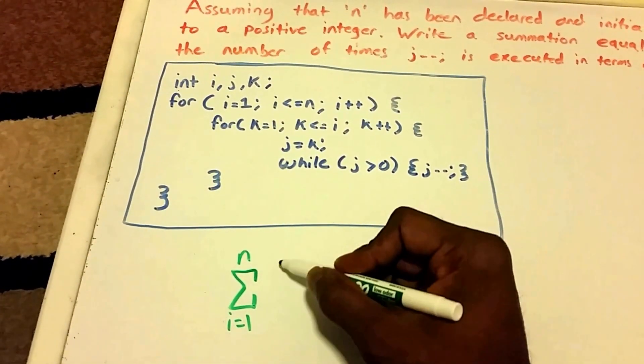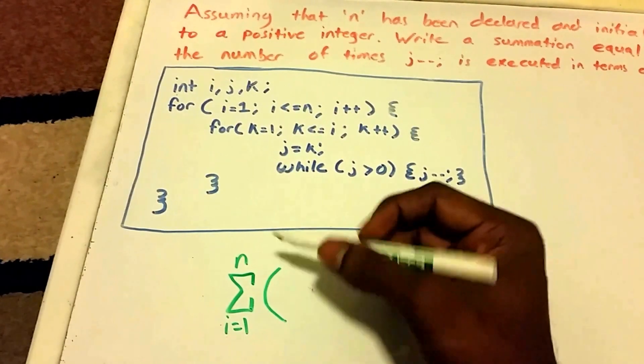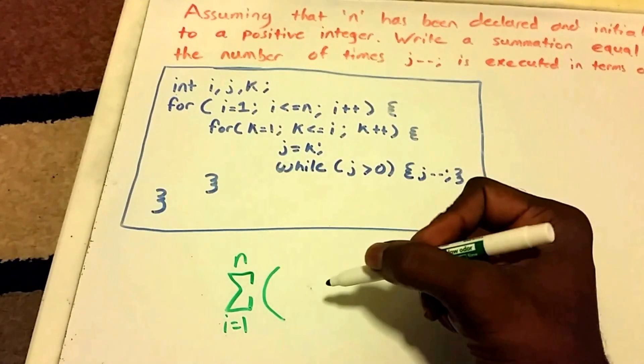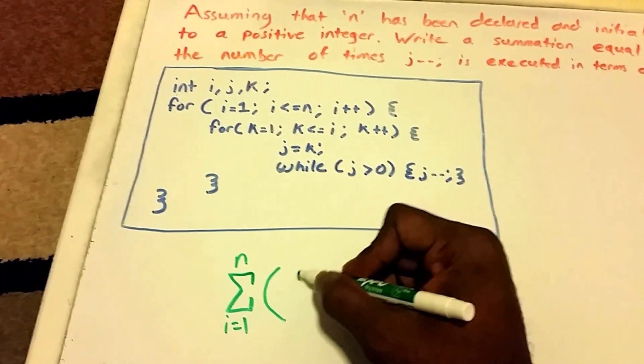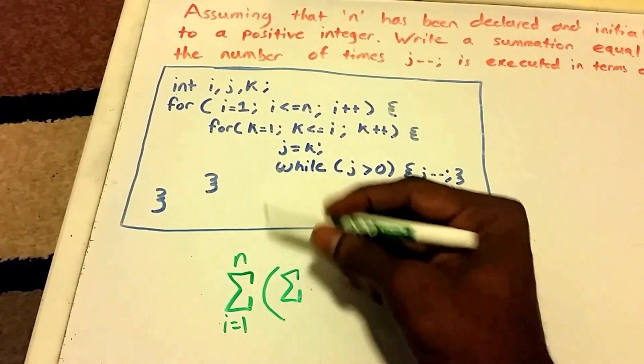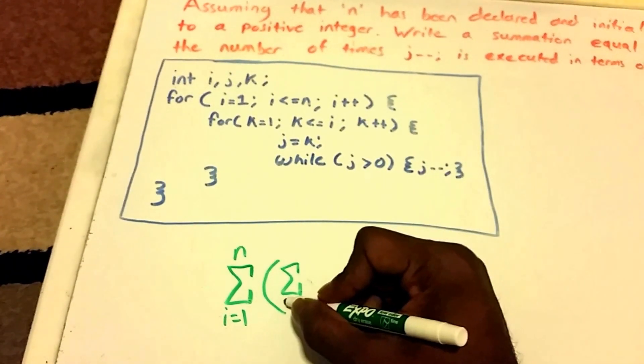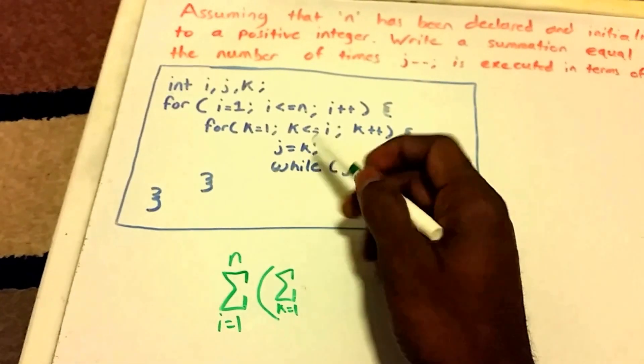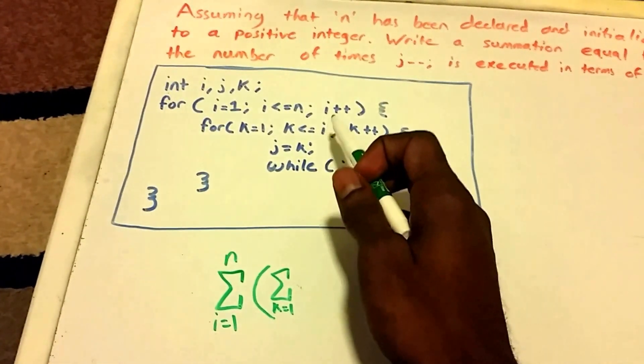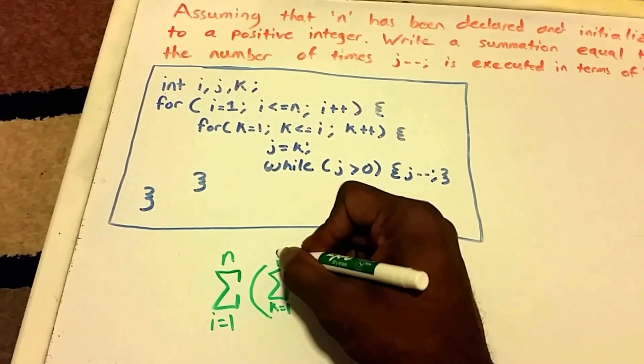And then within that summation is another loop. So we're going to write another summation, and it's going to run from k equals one, and this loop is going to run until it reaches i, so it's going to run i times.